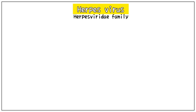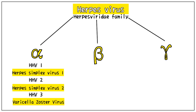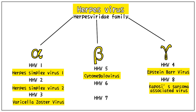The herpes virus belongs to the Herpesviridae family and is broadly subdivided into alpha, beta, and gamma. HHV stands for human herpes virus. The alpha subdivision contains HHV1, 2, and 3, commonly known as herpes simplex virus 1, herpes simplex virus 2, and varicella zoster virus respectively. The beta subdivision contains HHV5, 6, and 7 — note that HHV4 is skipped here. Of these, HHV5 is commonly known as cytomegalovirus. In the gamma subdivision, we have HHV4 and 8, commonly known as Epstein-Barr virus and Kaposi's sarcoma-associated virus respectively.